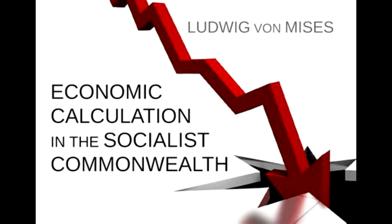It would not be difficult for a farmer, in economic isolation, to come by a distinction between the expansion of pasture farming and the development of activity in the hunting field. In such a case, the processes of production involved are relatively short, and the expense and income entailed can be easily gauged. But it is quite a different matter when the choice lies between the utilization of a water course for the manufacture of electricity, or the extension of a coal mine, or the drawing up of plans for the better employment of the energies latent in raw coal.